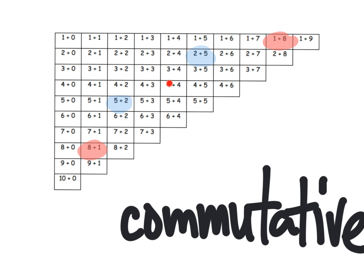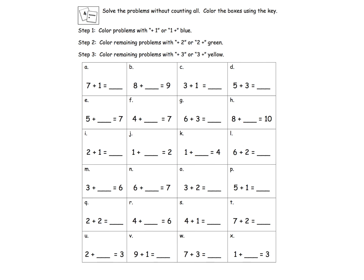If you have enough colors, students will see a really cool pattern showing where examples of the commutative property appear. The lesson asks students to solve problems without counting all. For example, 6 plus 3: rather than counting all or counting on by saying '6, 7, 8, 9' while holding up three fingers, students should use pattern recognition. Color all problems with a plus-one or one-plus in blue.